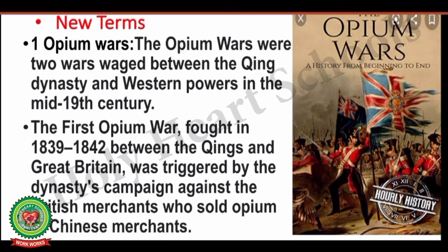First we will go through the new terms of the topic. The first term is Opium Wars. The Opium Wars were two wars waged between the Qing Dynasty and Western powers in the mid-19th century. The first Opium War was fought from 1839 to 1842 between the Qing and Great Britain, triggered by the dynasty's campaign against British merchants who sold opium to the Chinese.